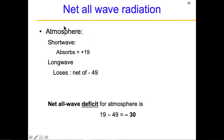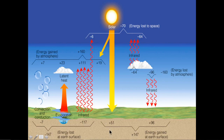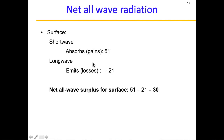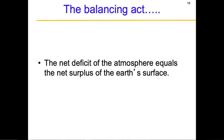The atmosphere is always in a deficit — it is always in a cooler state compared to the surface — because the surface gains 51 and its net losses are minus 21, giving a net surplus of 30 units. So the surface is always in excess and radiation always flows from surface to atmosphere. The net deficit of the atmosphere equals the net surplus of the surface — this is the balancing act.